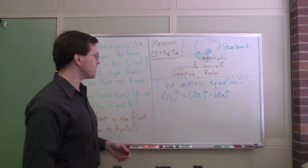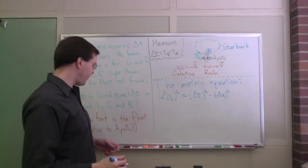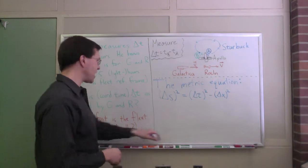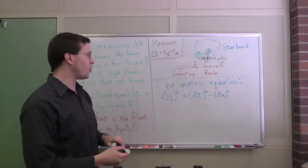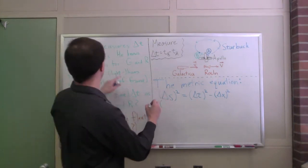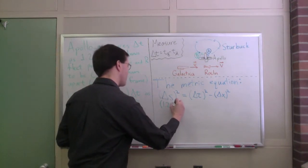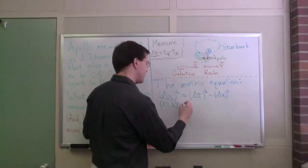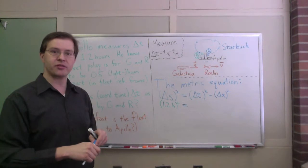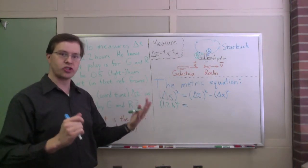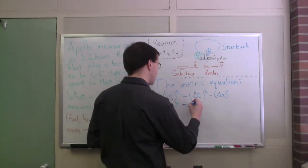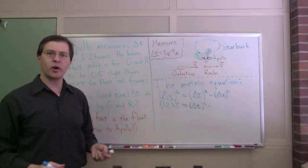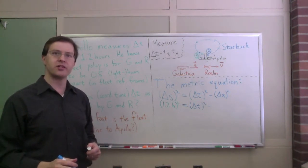In this case, last time we figured out that Apollo is the unique observer who is measuring space-time interval between those two events. So we know that delta s squared must be 1.2 hours squared. That's known. That's going to be equal to, in the fleet's reference frame, the Galactica and Roslin's shared synchronized clock reference frame, that's going to be equal to delta t squared minus delta x squared, the distance between the two events in that fleet reference frame.